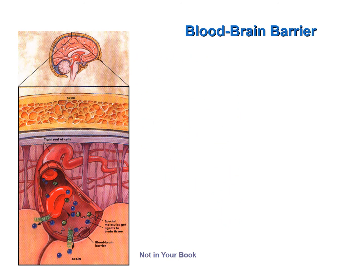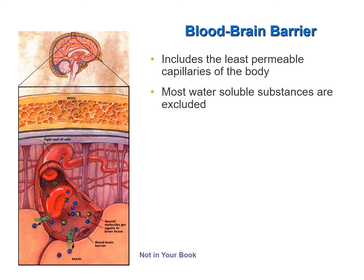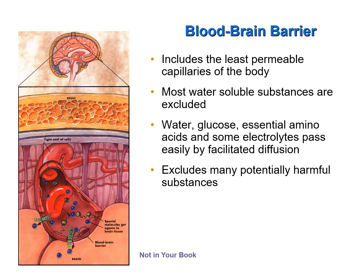The last feature of protection for the central nervous system is the blood-brain barrier. The blood-brain barrier consists of the least permeable capillaries of the body. The cells which make up the walls of the capillary have tight junctions between one another, so substances cannot pass between the cells — they must pass through the cells. This excludes most water-soluble substances from leaving the blood and entering the brain and spinal cord. Water, glucose, essential amino acids, and some electrolytes pass easily by facilitated diffusion, but most other substances, many of which could potentially be harmful, are excluded.